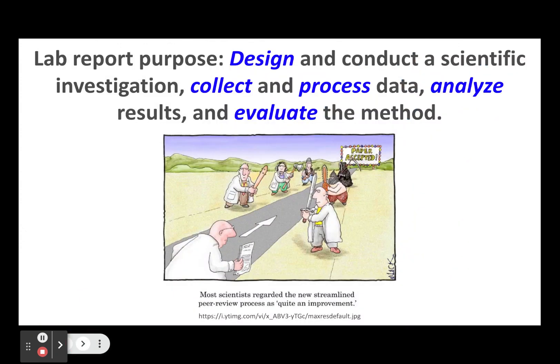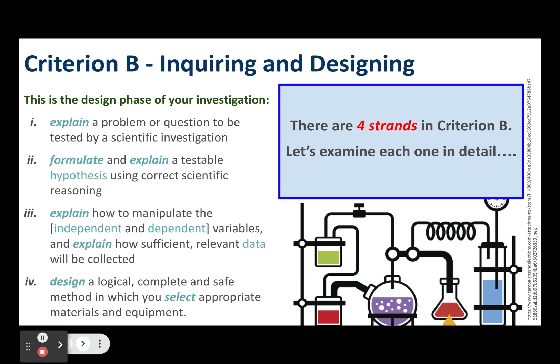The purpose of lab reports is not simply to submit a document to your teacher for a grade. The idea is that you should design and conduct a scientific experiment or investigation that allows you to record, collect, and process data, analyze that data to reach a conclusion, and then evaluate the method to determine whether your investigation was valid, reliable, and allowed you to answer your original inquiry or research question. Criterion B in MYP science is specifically about asking questions or inquiring and designing scientific investigations or experiments to find answers to those questions.